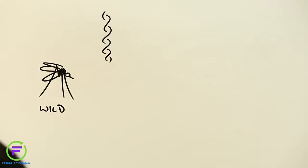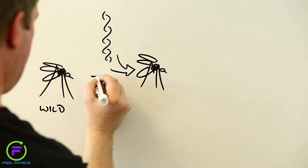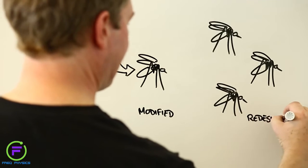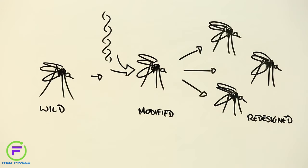Gene drives are designed to eliminate unwanted traits in insects and other animals. They work by pushing out genetic modifications through whole species until eventually every critter has been changed into something we have intentionally engineered.